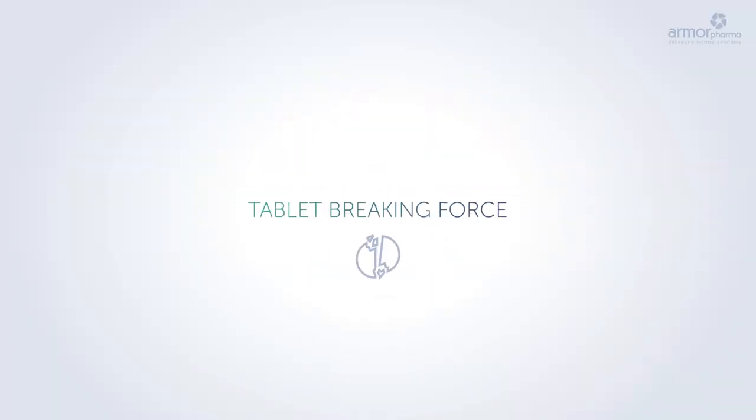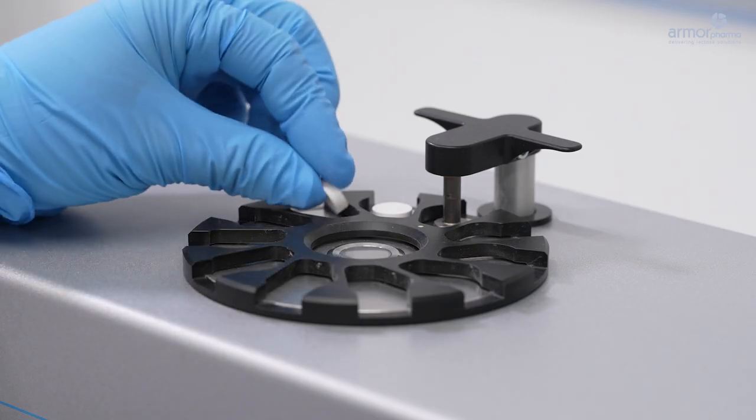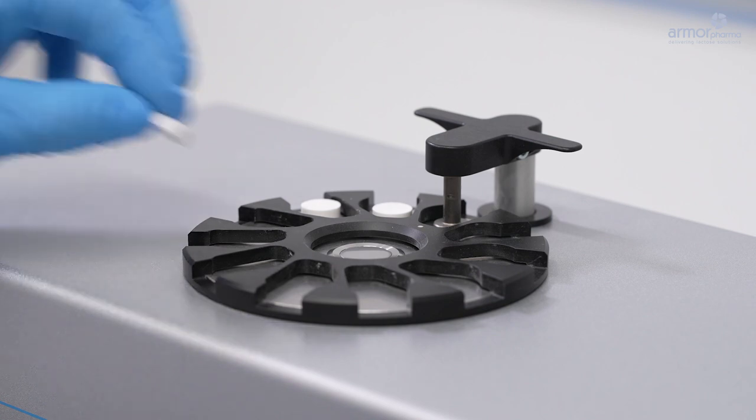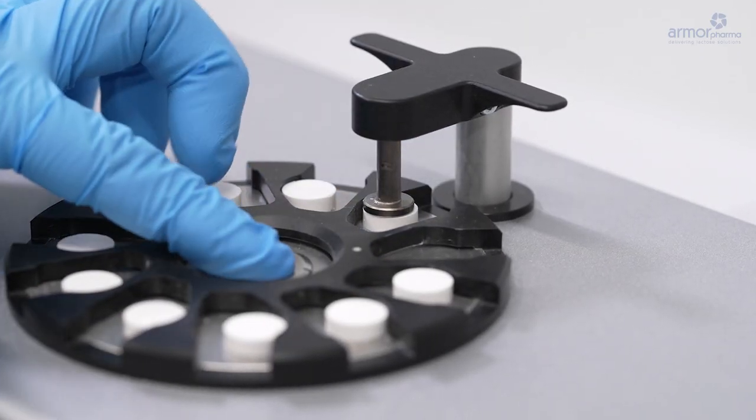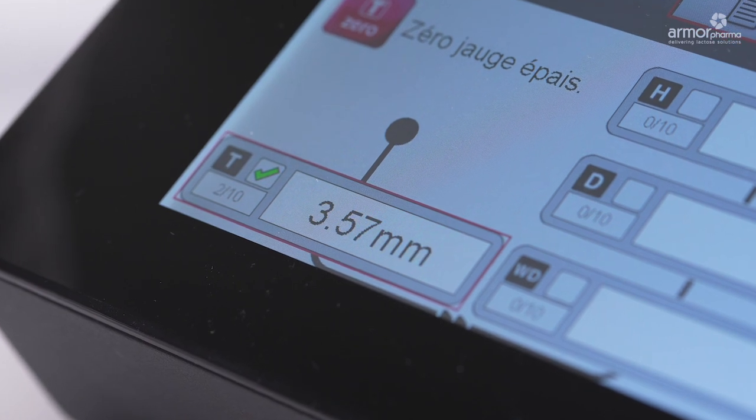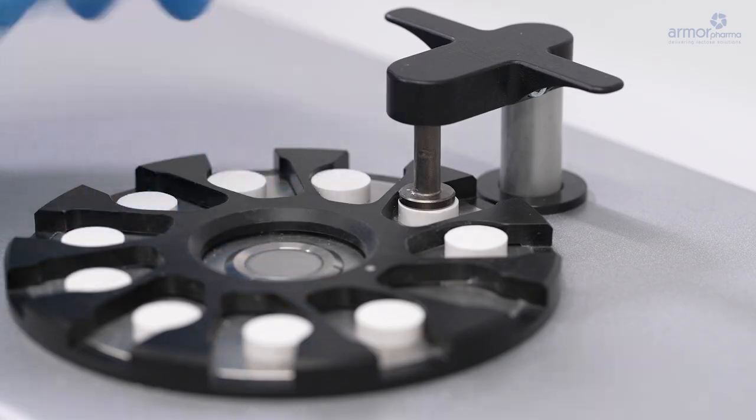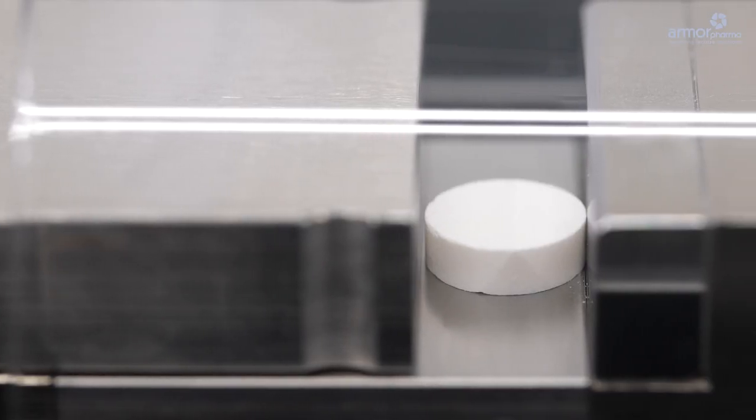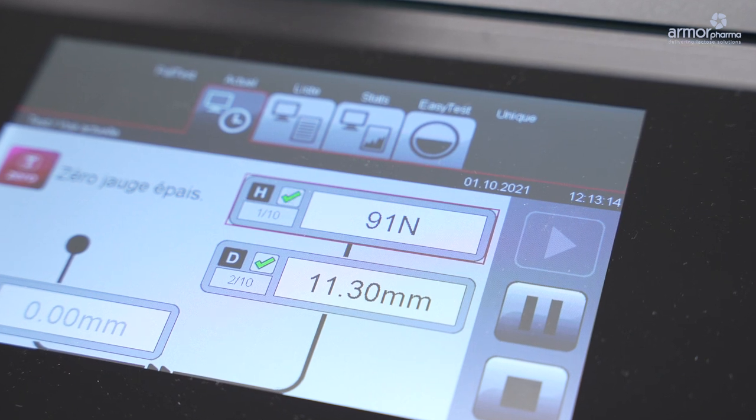Tablet breaking force: Once the tablet is produced, the tablet dimensions and breaking force are measured using a hardness tester. The aim of this test is to determine the force required to break the tablet. This will help to characterize the compaction properties of each formulation. The measurement is performed on series of ten tablets. An analytical scale determines the weight uniformity.